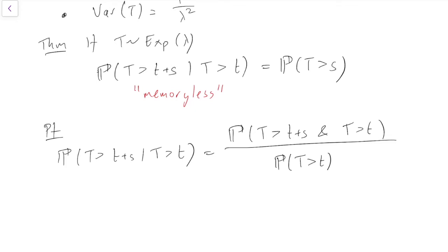Let's look at the top. If something is bigger than t+s then it's automatically bigger than t because t and s are positive. So once you've said it's bigger than t+s well obviously it's bigger than t that doesn't even need saying. So we can just leave probability T bigger than t+s on the top. Probability T is bigger than t at the bottom.